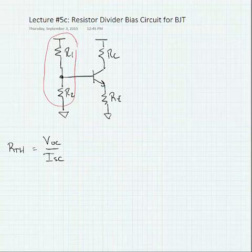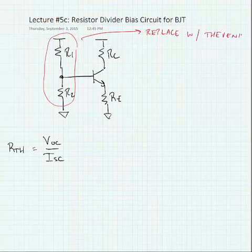Now what we're going to do in order to figure out the bias for this circuit is to replace this with a Thevenin equivalent.